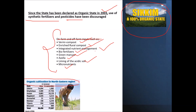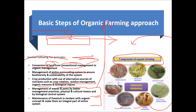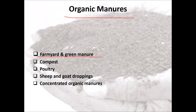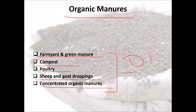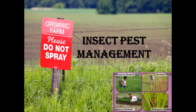The components of organic farming include vermicomposting, manures, bio-fertilizers, animal husbandry, biological management, crop rotation, and green manures. Livestock management is included because the dung and manure excreted by animals is a very important component. Organic manures include farmyard manure, green manure, compost, poultry droppings, sheep and goat droppings, and concentrated organic manures. Bio-fertilizers include bacterial and fungal types — for example, Rhizobium, Azotobacter, Azospirillum, plant growth promoting rhizobacteria (PGPR), PSBs, mycorrhizal fungi, blue-green algae, and Azolla.